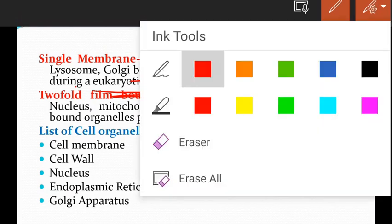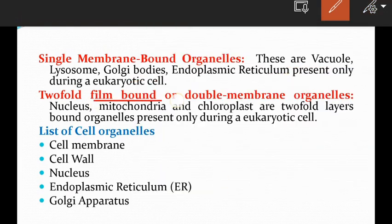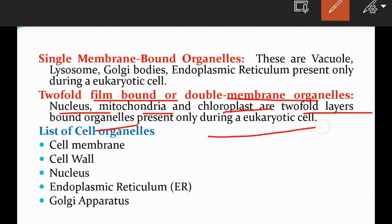And then double membrane-bound organelles — nucleus, mitochondria, and chloroplast are double membrane-bound organelles which are present only in eukaryotic cells.